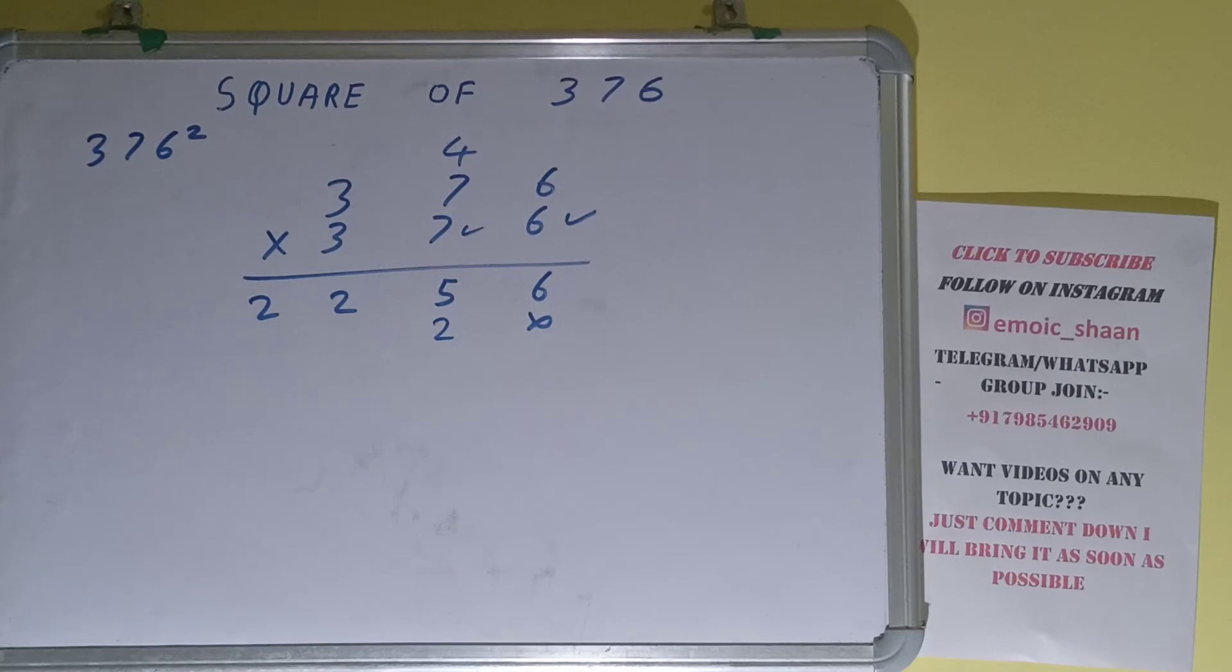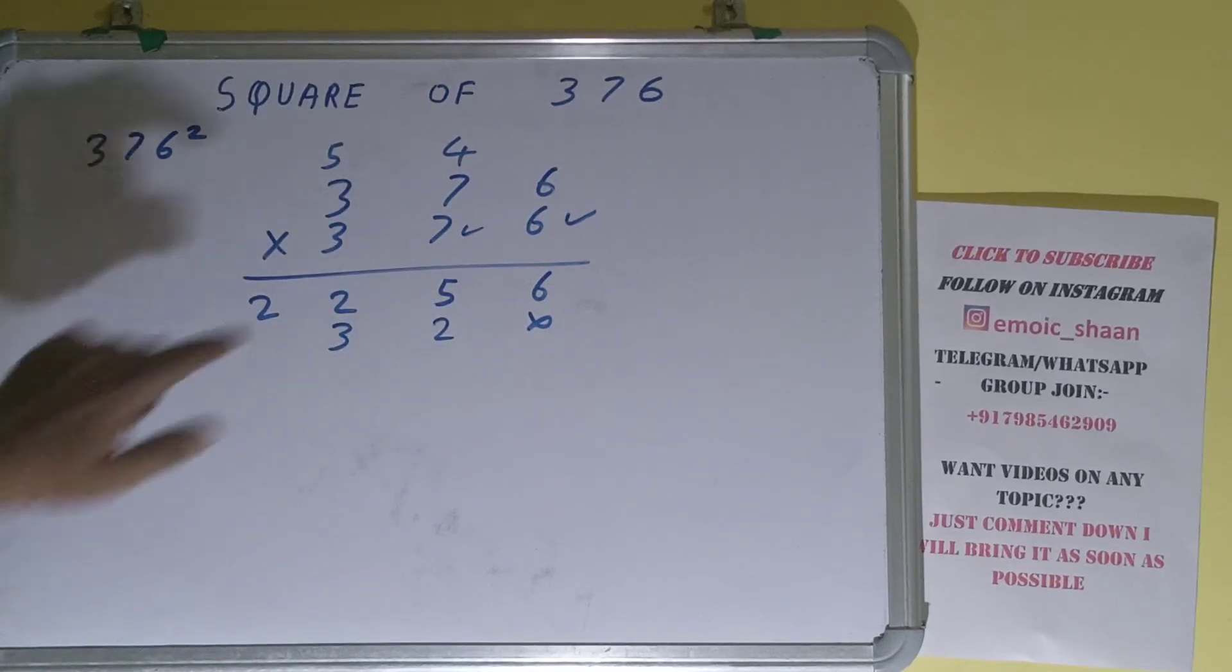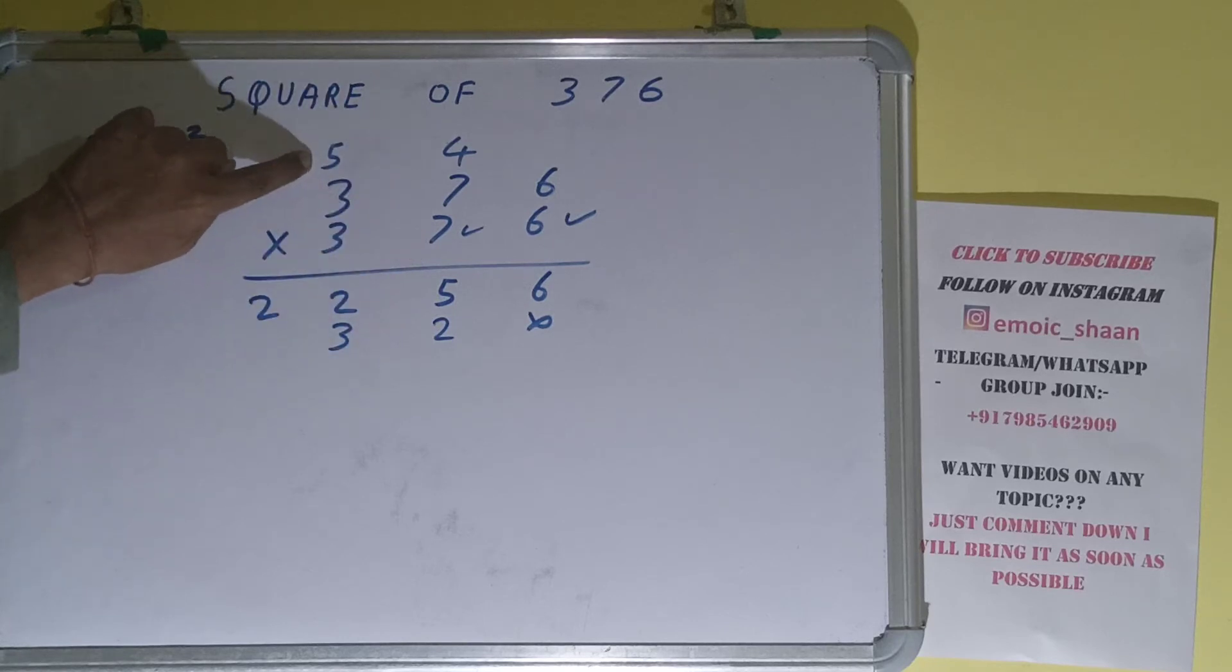7 times 3 is 21 plus 5 is 26. Now this 3. 3 times 6 is 18, 1 carry. 3 times 7 is 21 plus 1 is 22.